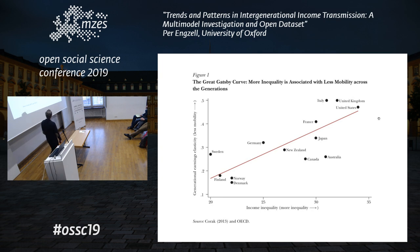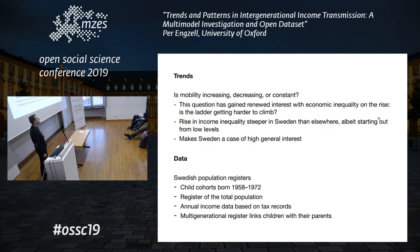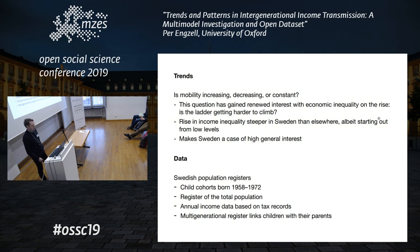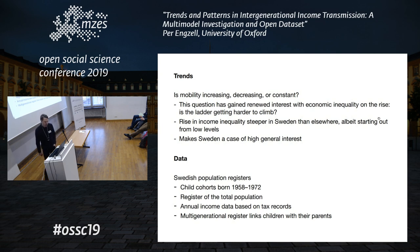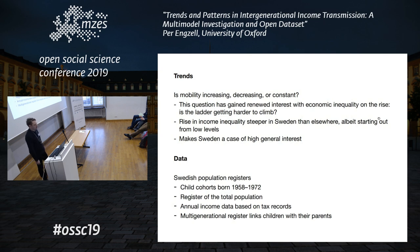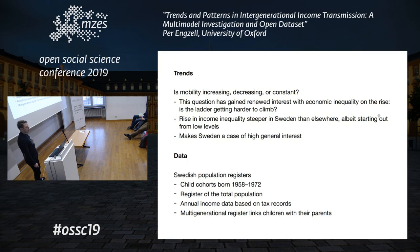This is only a scatterplot, so it's very hard to say whether one is causing the other, and that makes it important to study trends over time in a given country as one step closer to addressing causality. The case we're studying here is Sweden, which is notable as one of the rich western industrial countries where income inequality has increased the most. If there is some causal link between these two variables, we would expect transmission to get stronger over time in Sweden — stronger transmission, less mobility, less equality of opportunity.